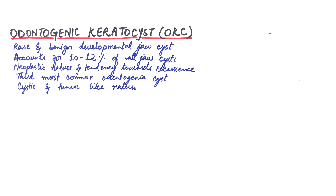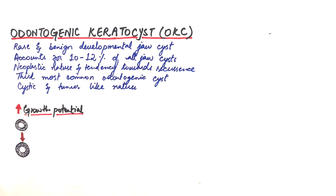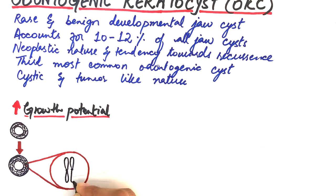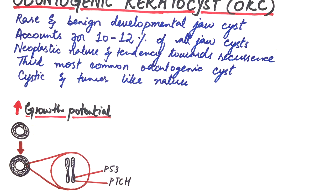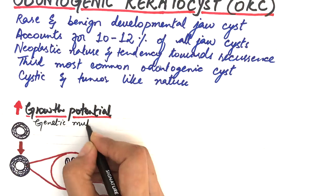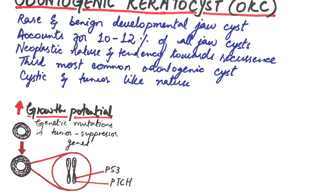First, its greater growth potential compared to other odontogenic cysts, which results in overgrowth of the cyst. This feature is suggestive of its aggressive behavior and is thought to be a result of inactivation or mutations in some tumor-suppressor genes within the cystic epithelium, like P53 or PTCH genes.